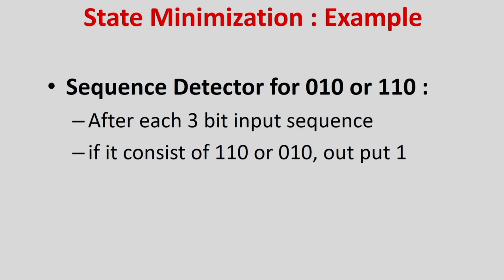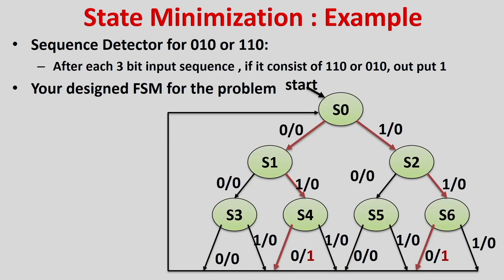Let us design a sequence detector FSM for '010' or '110'. Inputs are coming in a sequence; after each 3-bit input sequence, if it consists of '110' or '010', output a 1, otherwise output 0. Suppose we have designed an FSM for this problem. Initially you are in the start state, and whenever you get a 0, you go to state S1 with output 0. This FSM is a Mealy FSM where output is shown on the transition edges.